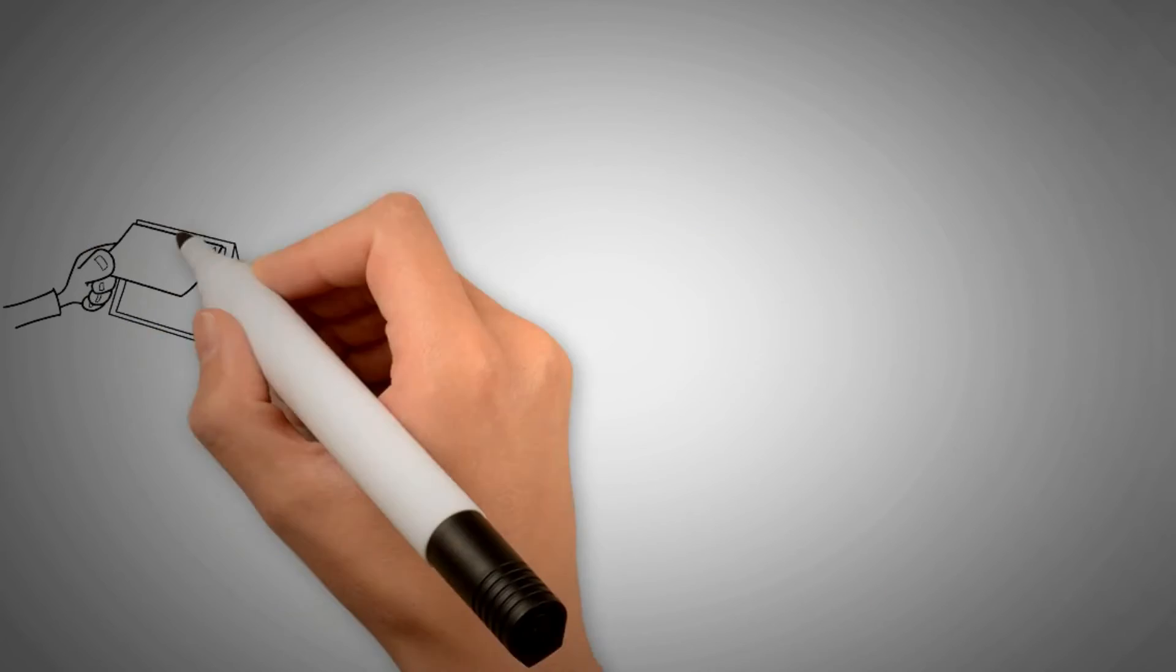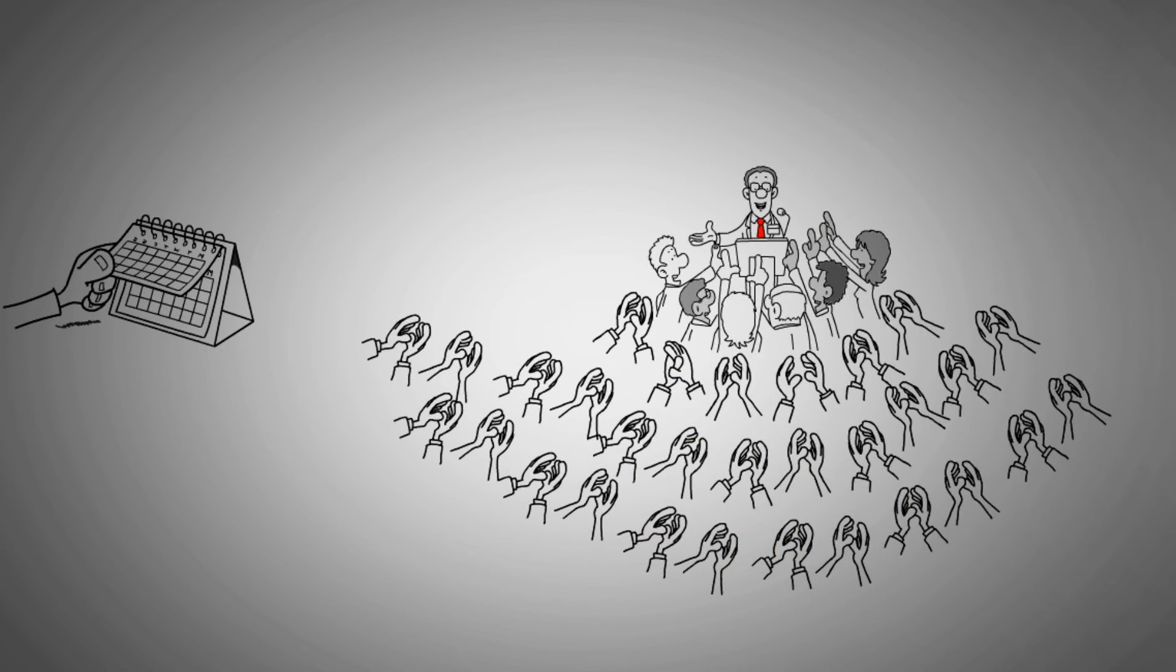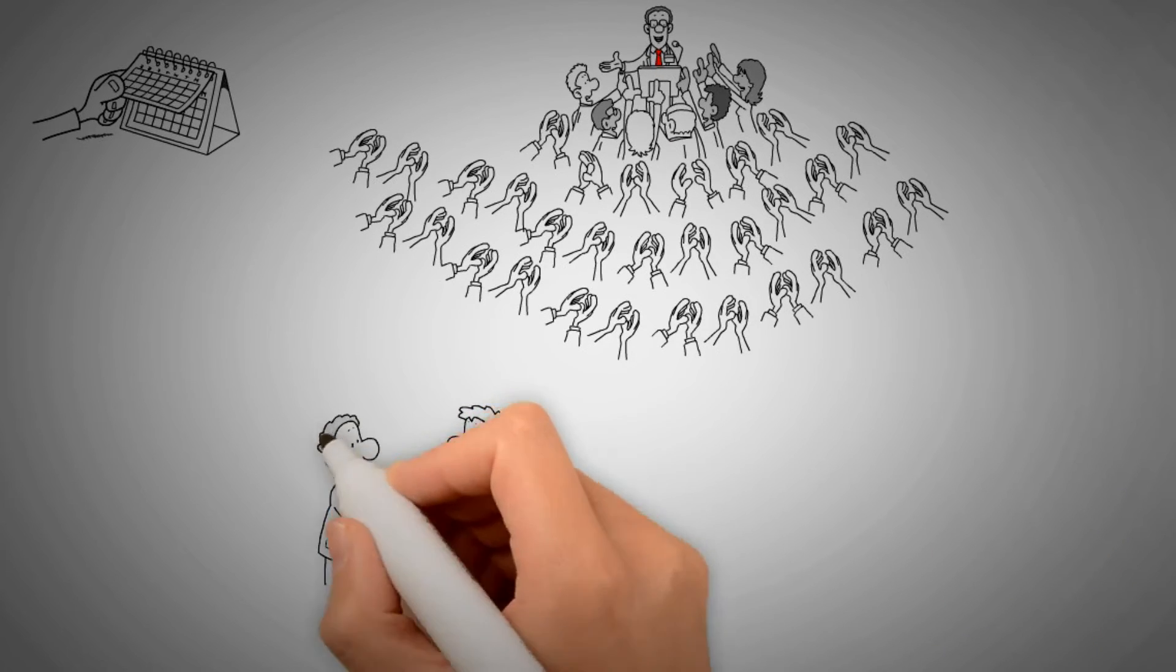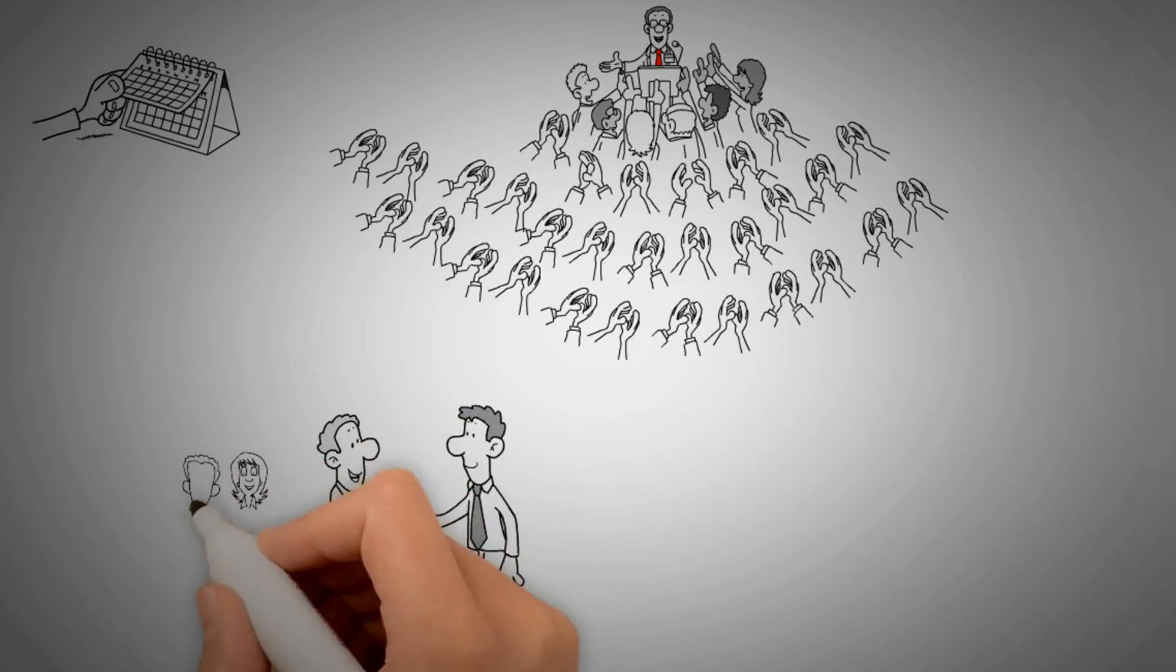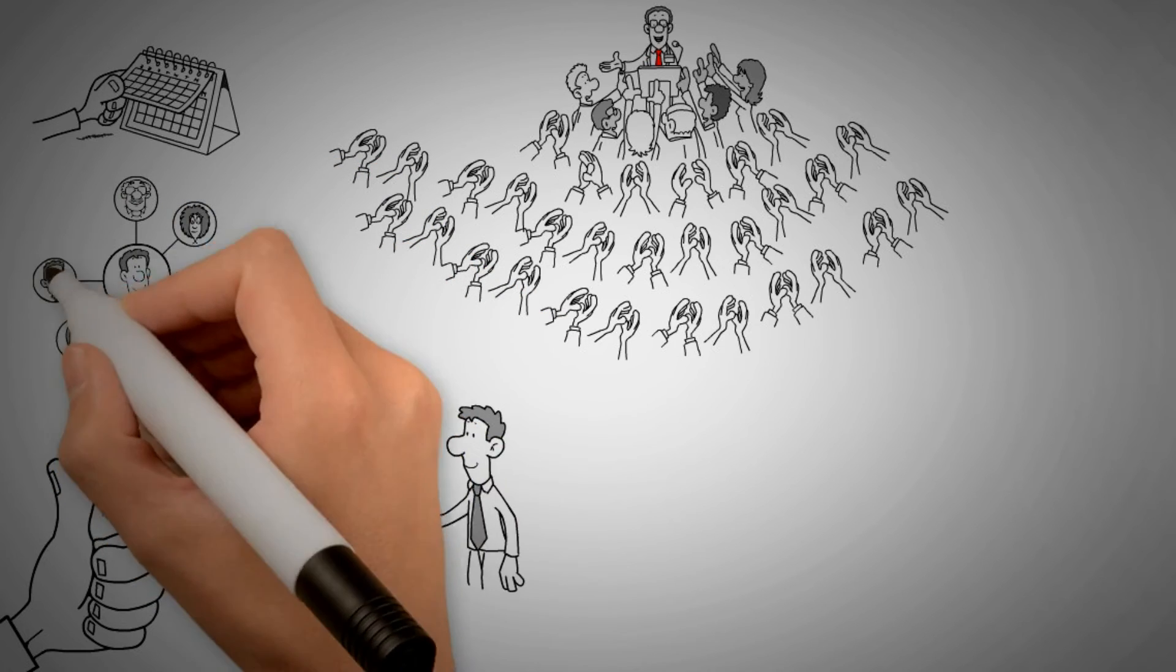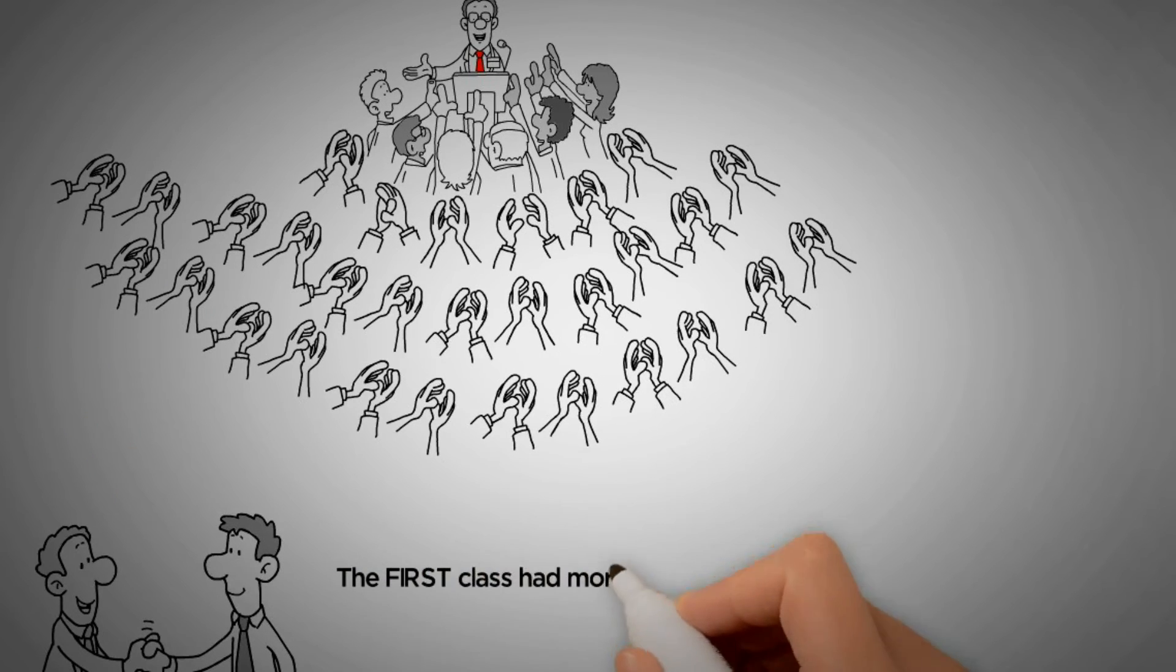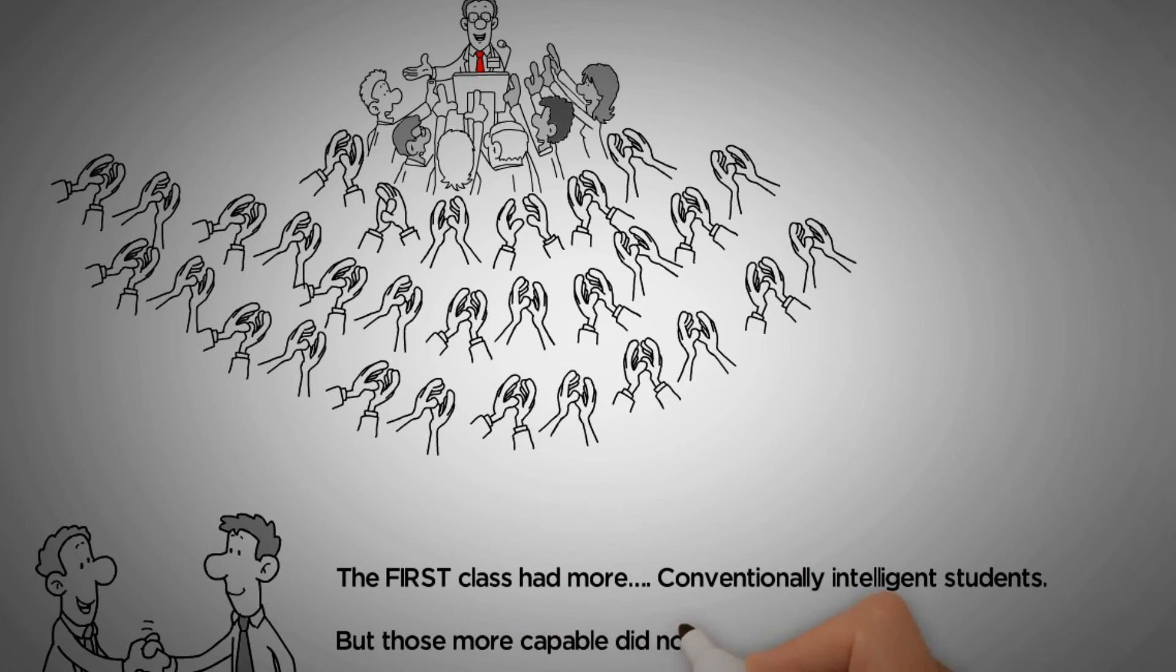The year after, Tim opened the same class by telling the same cautionary tale I've shared with you. Six out of 17 students finished the challenge in only two days that year. Why? Were they all smarter? Better connected? No. Tim actually says that the first class had more conventionally intelligent students. But those more capable did nothing. Those less capable took action.